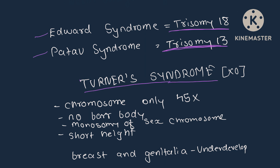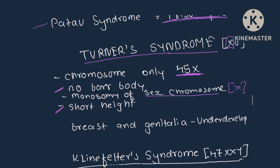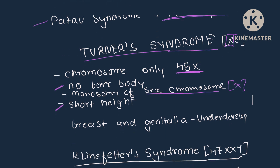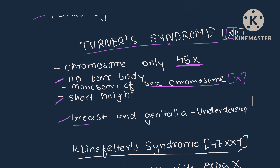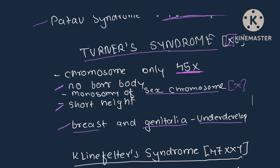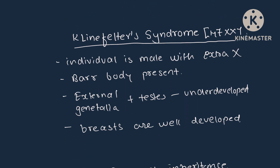In Turner syndrome, the chromosome number is only 45. No bar body is present due to the presence of only one X chromosome — this is monosomy of the sex chromosome. The individual is short in length, and breasts and genitalia are underdeveloped.